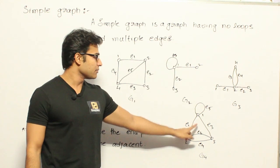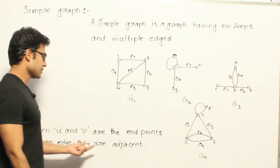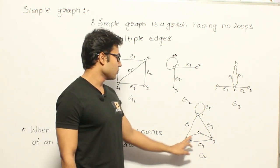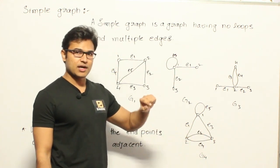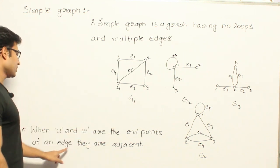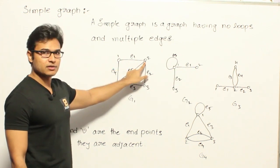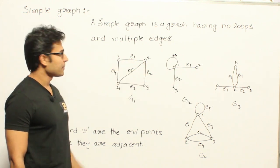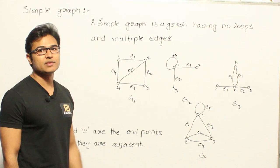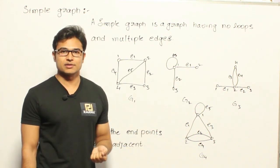There is also the concept of adjacency. Two vertices are said to be adjacent if there is an edge between them. When U and V are the endpoints of an edge, they are adjacent. For example, 1 and 2 are adjacent because there is edge E1, but 1 and 3 are not adjacent because there is no edge between them.